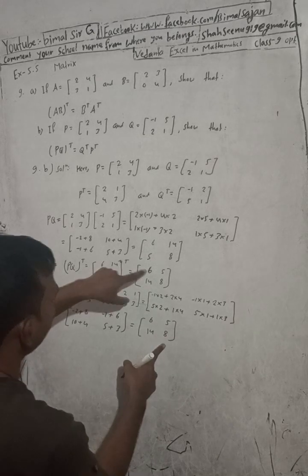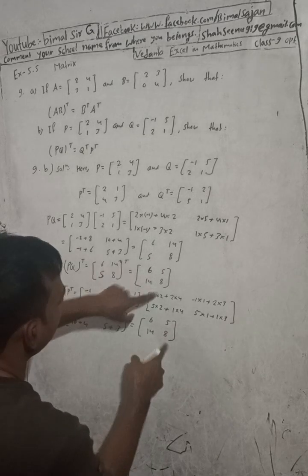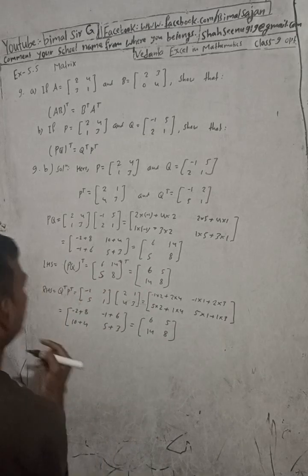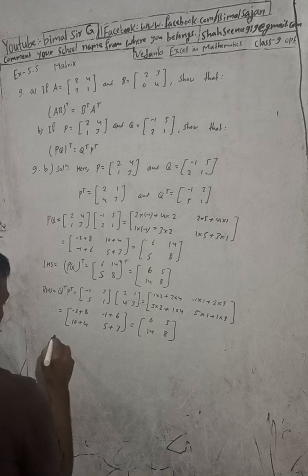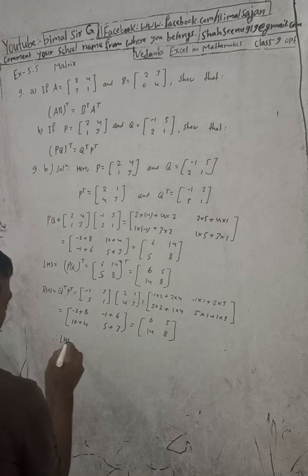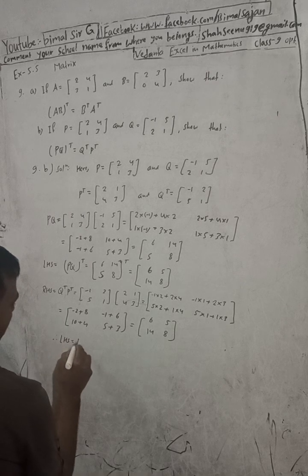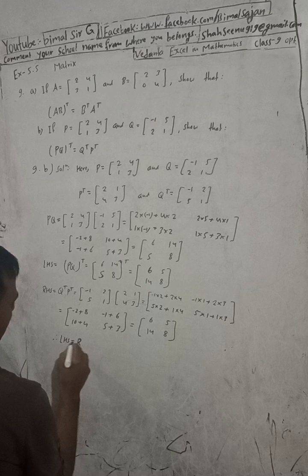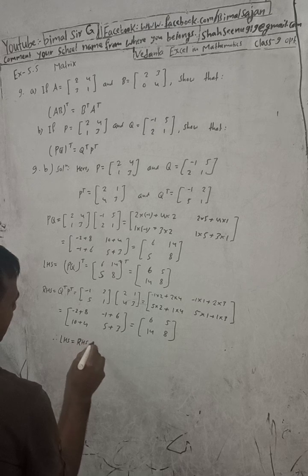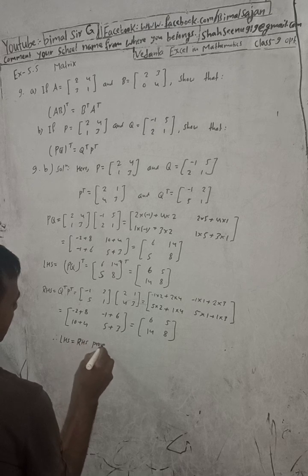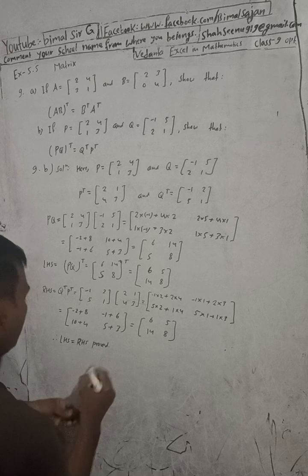LHS = [6,5; 14,8] and RHS = [6,5; 14,8]. LHS equals RHS. Therefore (PQ) whole transpose = Q transpose × P transpose is proved.